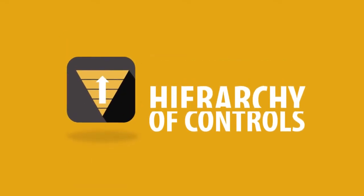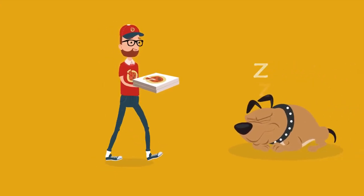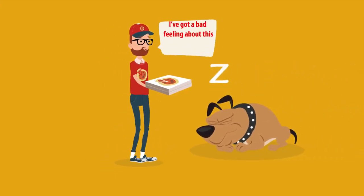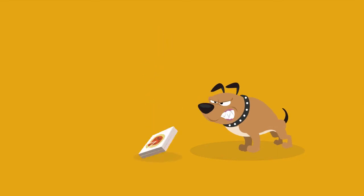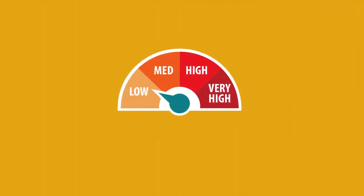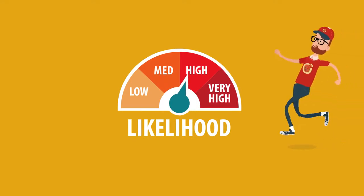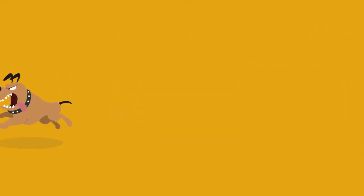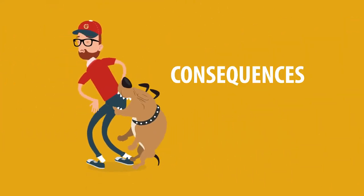The hierarchy of controls. The level of risk associated with an event can be established by assessing the chance of the event happening — likelihood — and the potential harm or damage the event could cause — consequences.